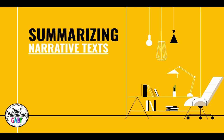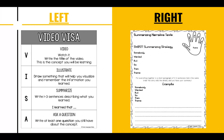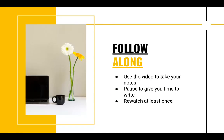Hello everyone and welcome to our video on summarizing narrative texts. Before we get started, let's make sure you have your notebook set up correctly. You should have your video visa on the left side ready to go so that you can reflect on this after you watch the video, and the right side should have your note taker ready to write your notes. Make sure you're following along with the video to write your notes so that you get everything down accurately, and pause to give you time to write.